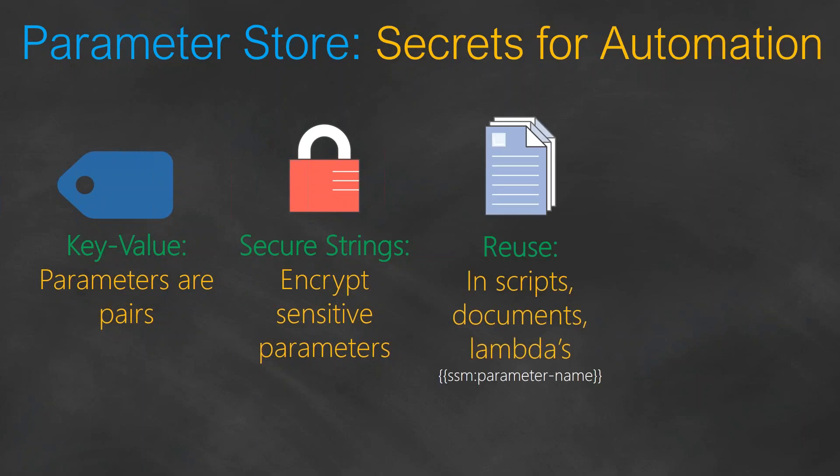Parameter Store is not a one-time usage — you can reuse values across all your scripts and automation templates, such as Lambda functions, CloudFormation, or APIs. For example, an API key stored as a parameter can be used by Lambda functions to call third-party APIs. Version numbers can also be stored and used by your applications, or a golden AMI ID can be picked up by CloudFormation so every new template launch gets the latest VM.